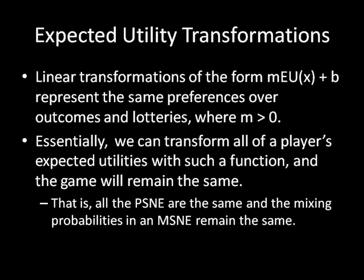So you may be wondering what's going on here — there is a pattern. Here's a rule about expected utility transformations: we can take any linear transformation of the form m times the expected utility of an outcome plus b, and these linear transformations of the utilities will represent the same preferences over outcomes and lotteries, as long as m is greater than zero. This is essentially the equation for a line with slope m and intercept b, where we replace x with the expected utility and ensure the slope is positive.